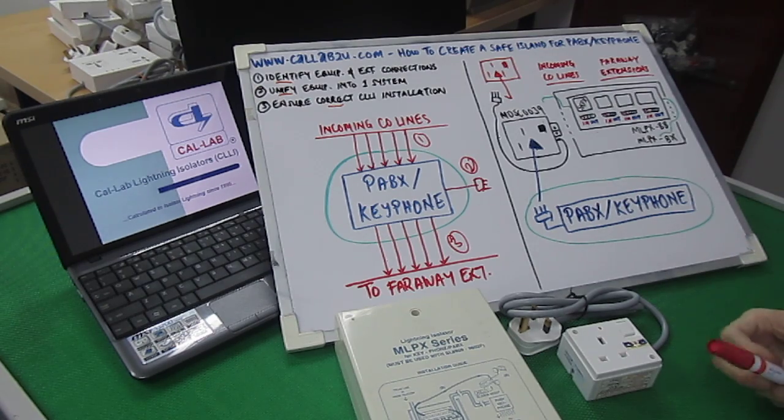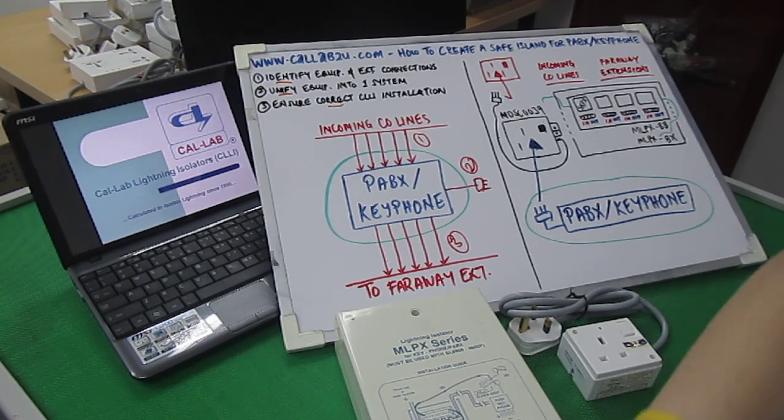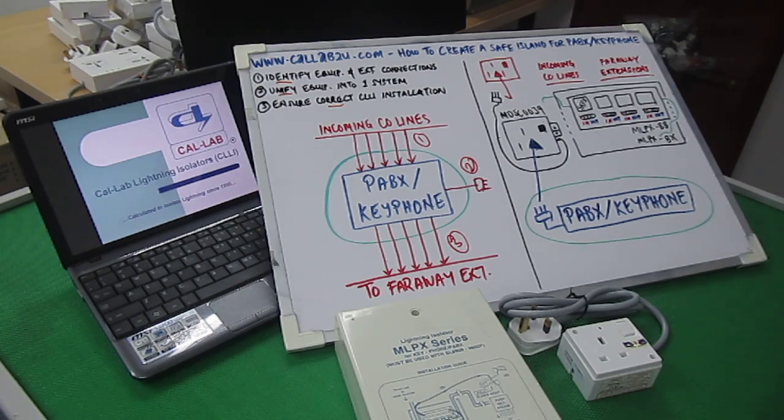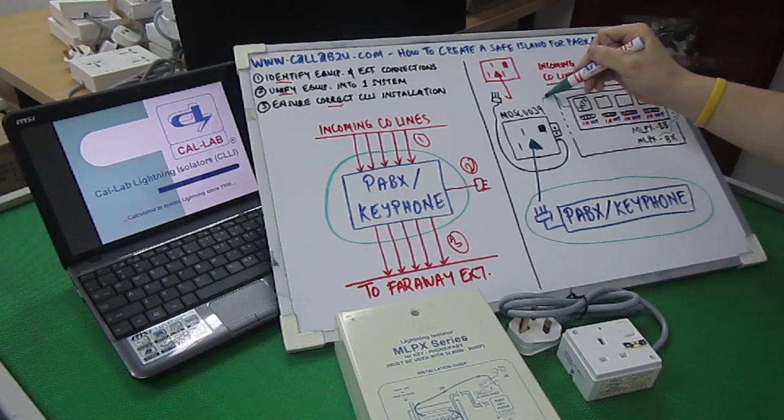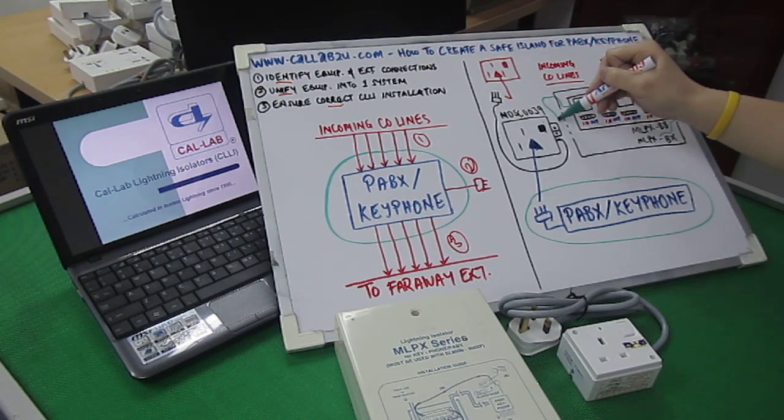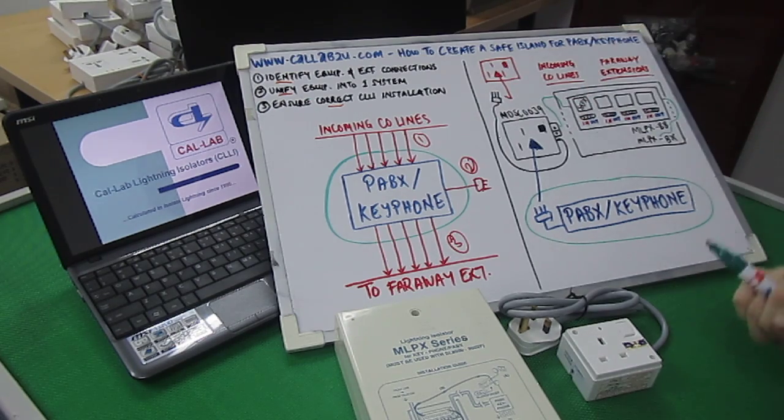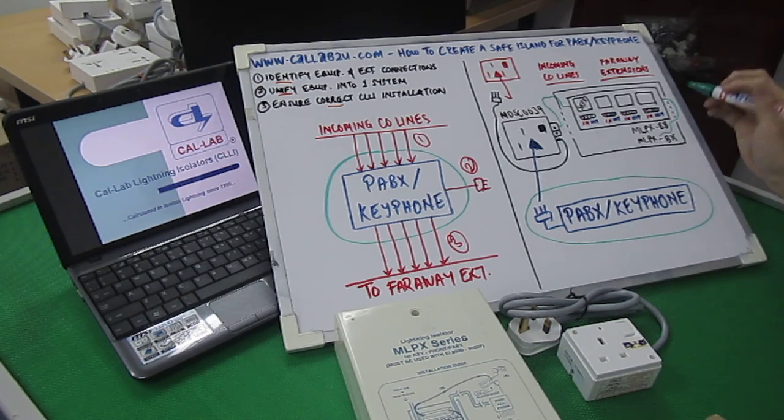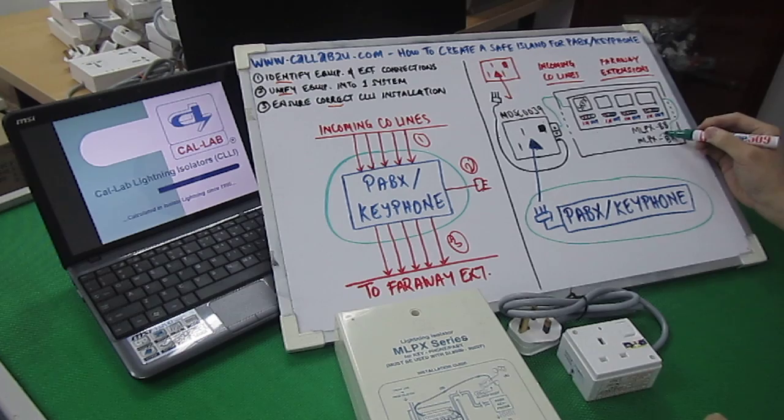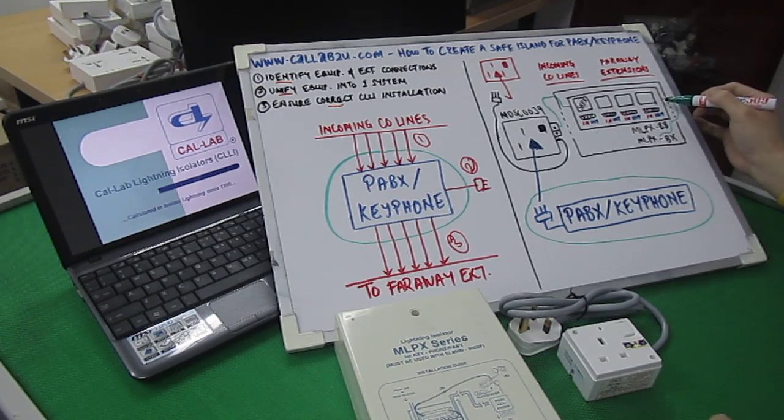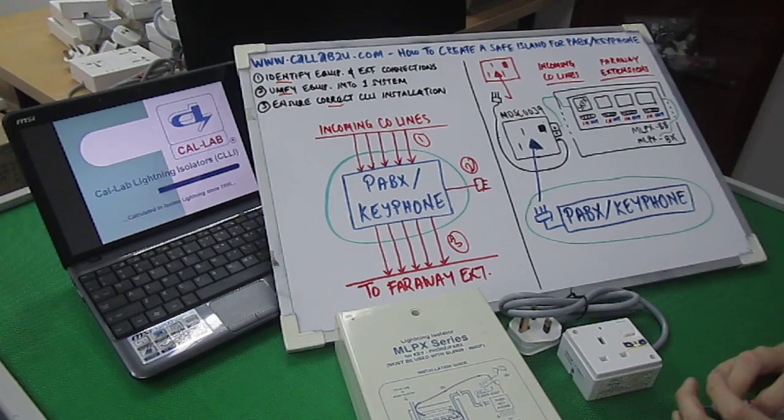The third thing to note is that all CalLab Lightning Isolator's green wire or earth wires need to be connected back to the main power isolator. So, as you can see, the green wires here need to be connected back to the earth terminal of the MDSC0039. You'll note that there'll be another one hanging by the side here. Now, this is to actually connect to another baseboard in the case you have additional incoming or extension lines.